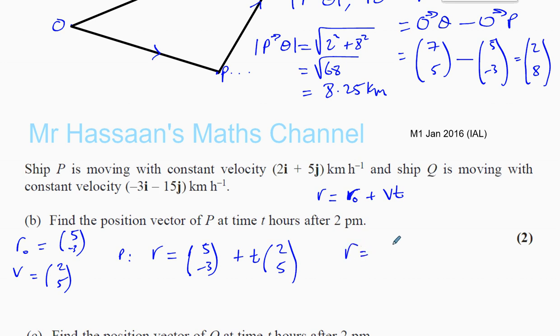That will tell your position any time. If you want to make sure you write in the same format as given in the question, you can say 5i minus 3j plus t times 2i plus 5j. Both of these are acceptable. I personally prefer to use this, especially in my calculations.